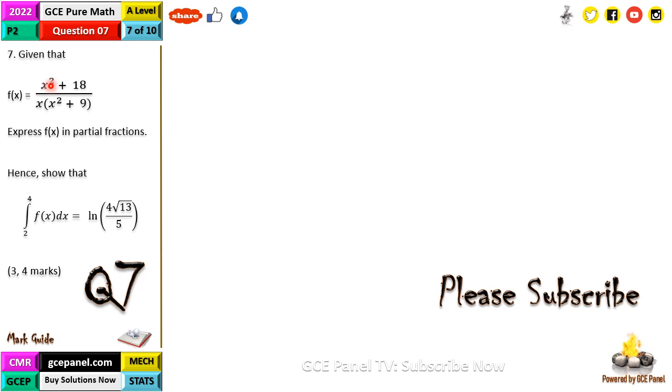Expressing this in partial fractions, we have x squared plus 18 all that on x into x squared plus 9. This is going to be in the form A over x plus, and this other factor is bx plus c, so we're going to have bx plus c all this on x squared plus 9.